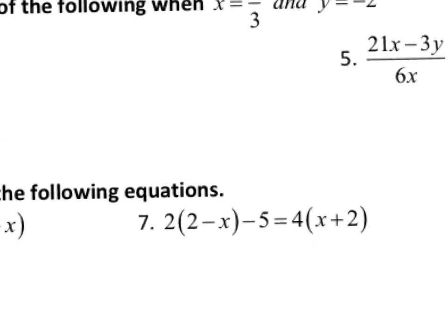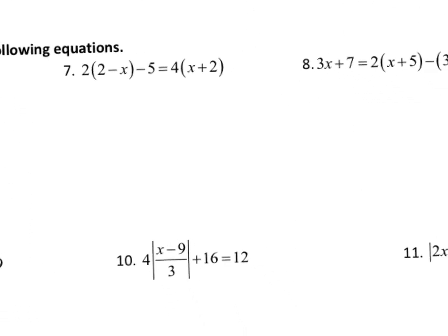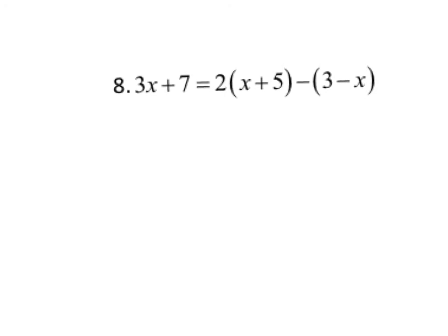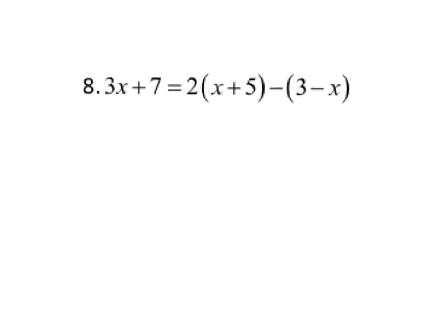Skipping to number 8, this is a good illustration of not distributing too much. A lot of times students will think they need to keep foiling and distributing, but you don't. The left side of the equation is set — I'm not going to touch it. On the right side, I need to get rid of the parentheses. There's a 2 out front that I'll distribute, and then a negative out front of the second parentheses. Once you distribute that negative, you're done — no need to keep distributing or foiling.